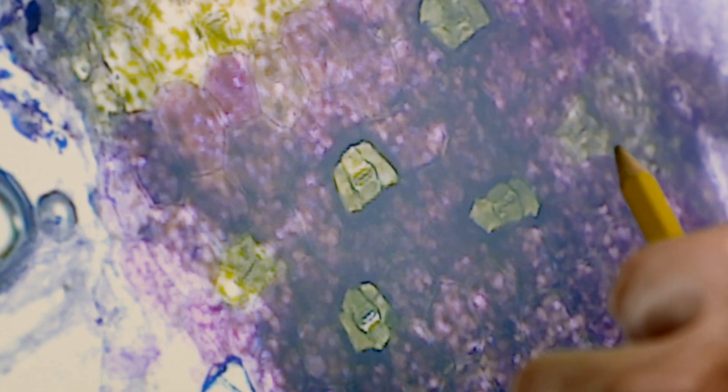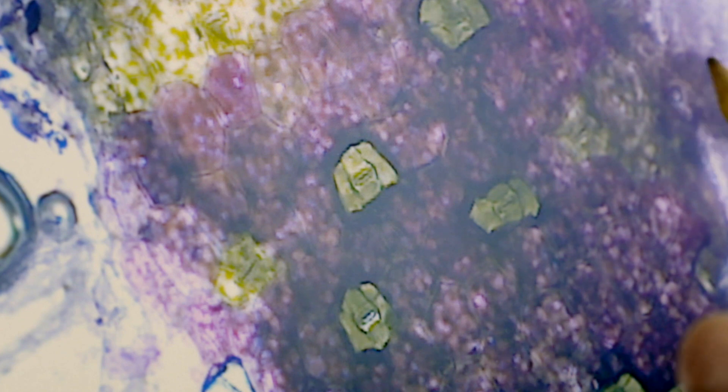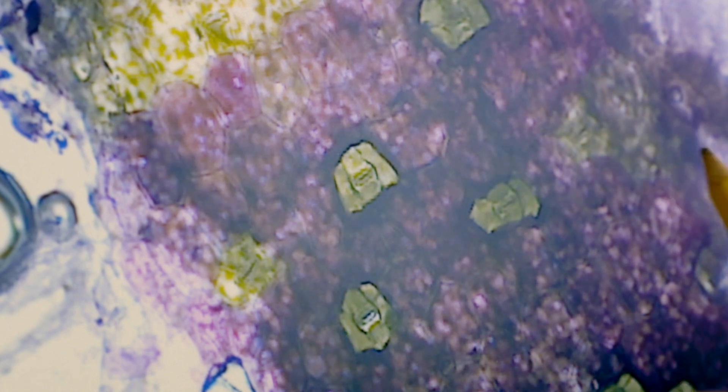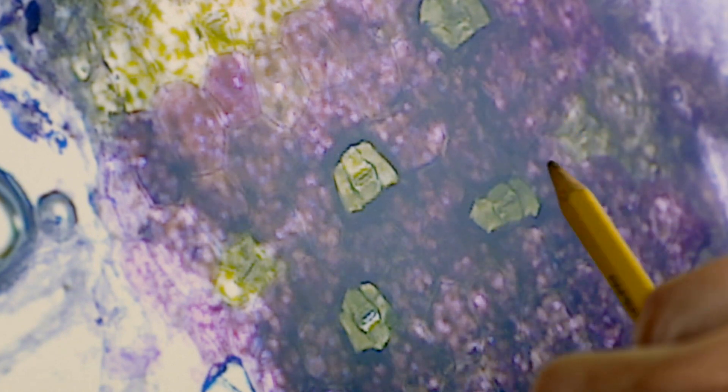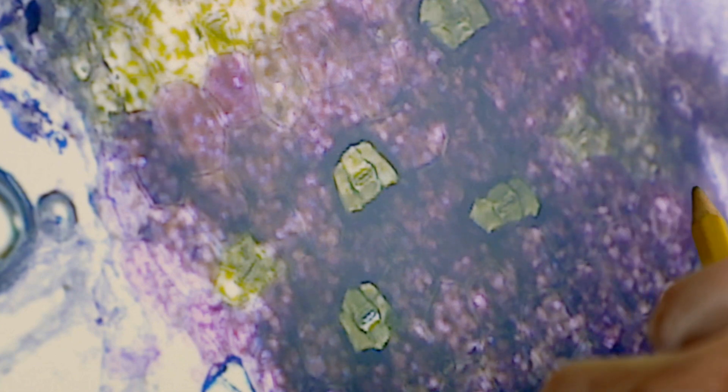The estomas serve to do gas exchange. Through there, for example, CO2 enters so that the leaf can perform photosynthesis, so that the cells that perform photosynthesis use that CO2.